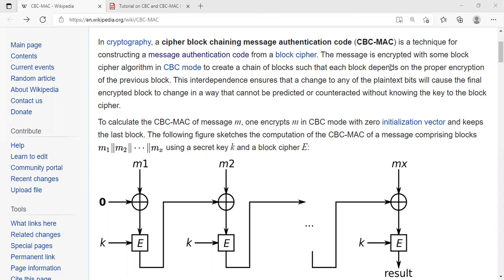First of all, in regular CBC, we are discouraged to use an IV equals 0, for example. IV in regular CBC must be a truly random number, a cryptographically secure random number. But in the case of CBC MAC, it must be initialized to 0. As you can see here, IV is 0. So why is that case? So let me show you what happens if IV is non-zero.